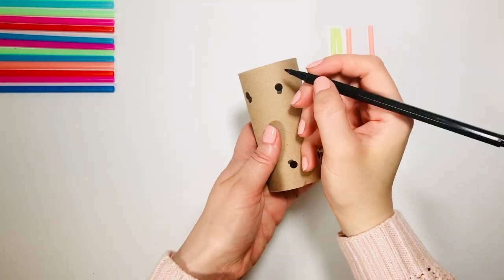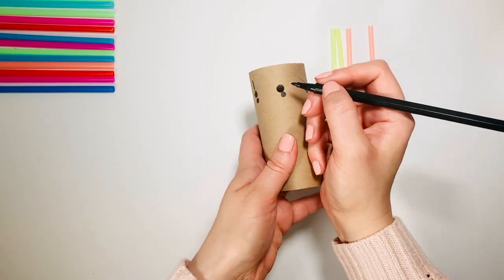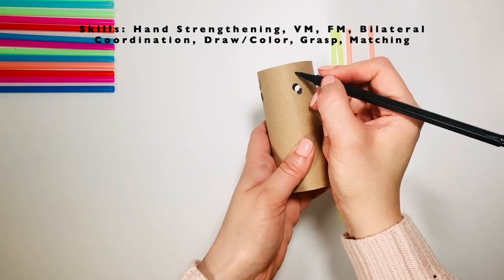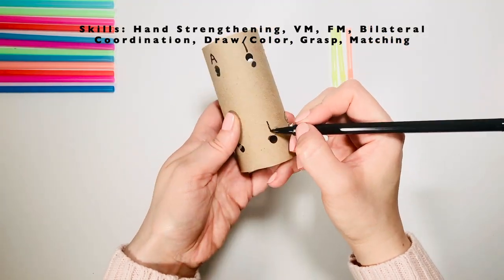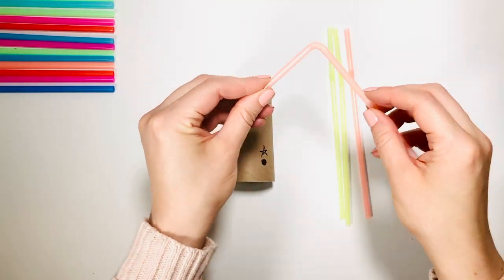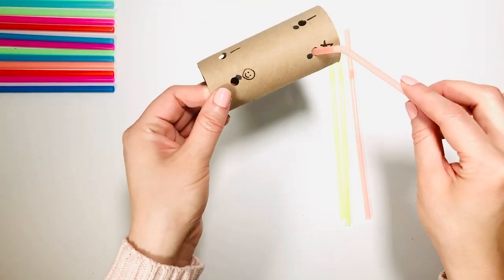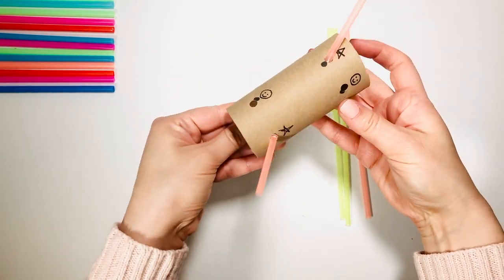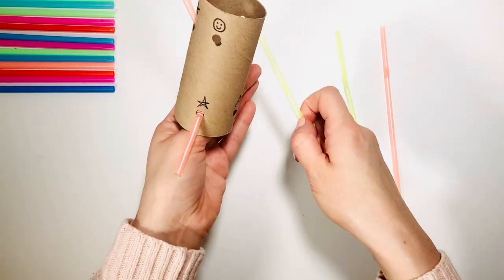Label the dots using letters, numbers, shapes, or pictures. Now use the straw to connect the star to the star, and smiley face to the smiley face.